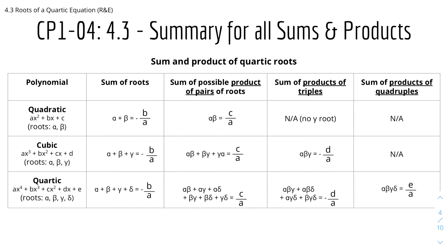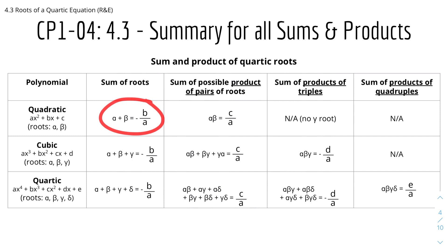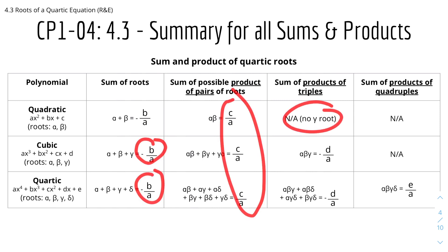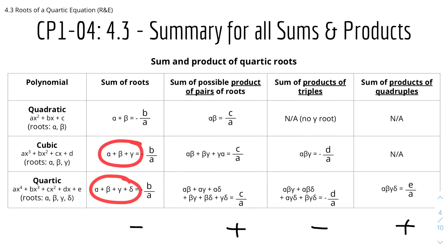Here is a summary for all the sums and products we've encountered so far — everything we'll cover in Core Pure 1. We've seen quadratic, cubic, and quartic. Notice how quadratic only goes up to the product of pairs, because there's no third or fourth root, and cubic only goes up to product of triples. In each column they share the same values: −B/A, C/A, −D/A, E/A. The signs oscillate between negative and positive as you go down.